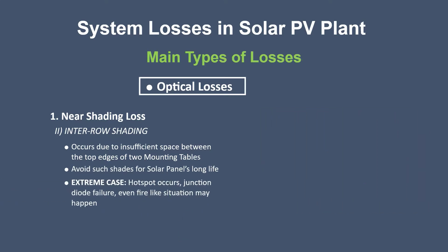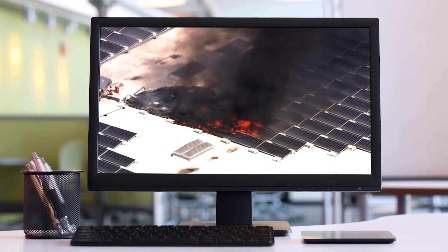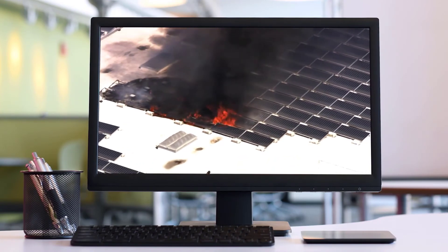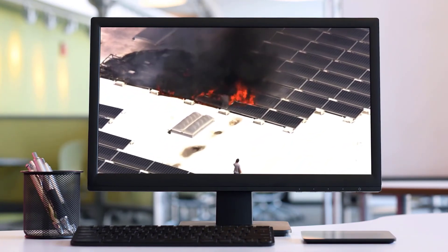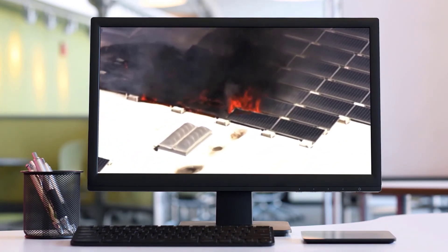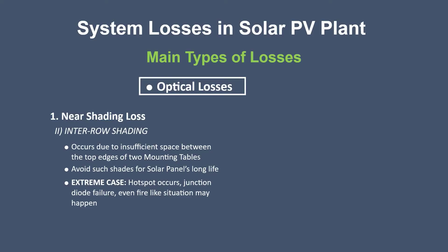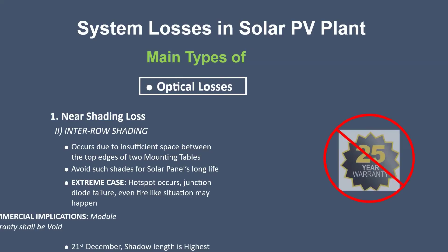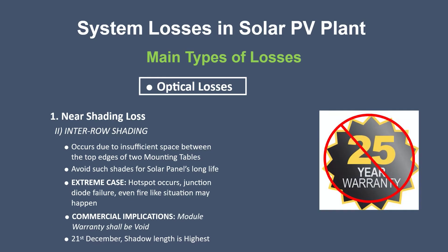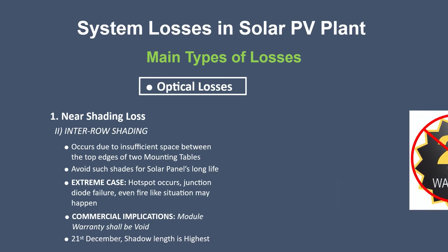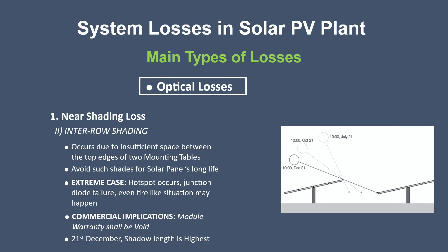Back to near shading loss: in this case also, modules can develop hot spots which result in losses not only in generation but also in safety and assets. We highly recommend that during site survey and assessment, please make note of any nearby obstacles. You'll lose your module warranty agreement for such mistakes — and don't forget about the 21st of December, the longest shadow day.